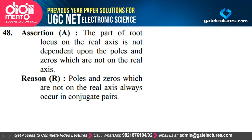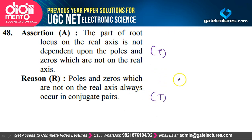Question 48: The part of the root locus on the real axis is not dependent upon poles and zeros which are not on the real axis — absolutely true. Poles and zeros not on the real axis always occur in conjugate pairs, which is why they are not considered. Option A is correct.